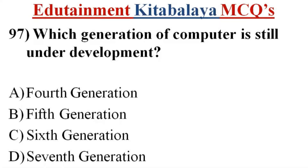Question number 97. Which generation of computer is still under development? A. Fourth generation. B. Fifth generation. C. Sixth generation. D. Seventh generation. Correct answer is B. Fifth generation.